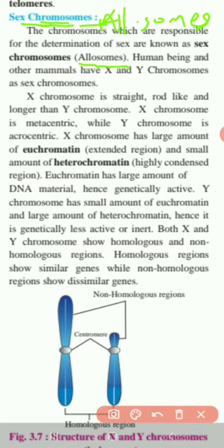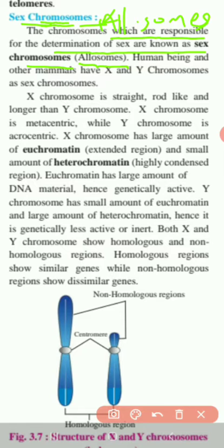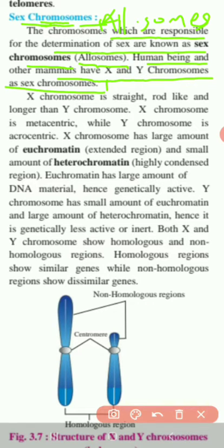The chromosomes which are responsible for the determination of sex are known as sex chromosomes or allosomes. Human beings and other mammals have X and Y chromosomes as sex chromosomes.